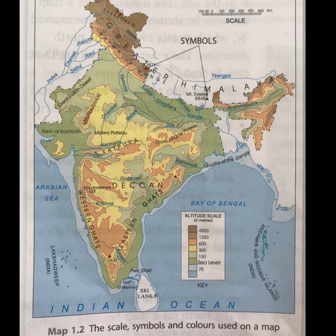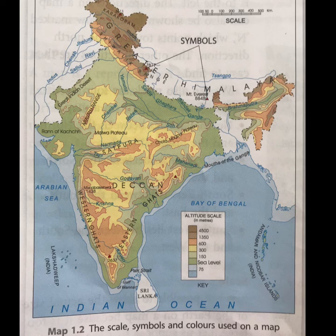The green color shows the plains or lowland areas, so all the plains are colored green. This makes it easy to identify the plain areas on the map of India. The brown color, seen mostly at the top of the map, shows the highlands, or what we call the mountains.